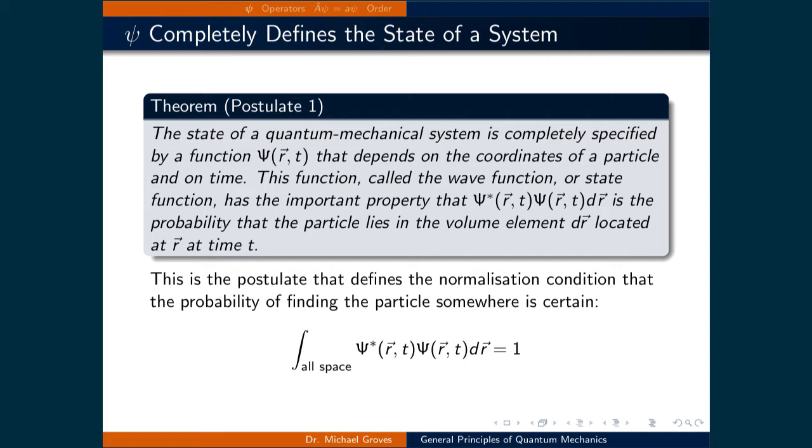This function, called the wave function or state function, has the important property that psi star psi times dr is the probability that the particle lies in the volume element dr located at r and at time t. The postulate is written using all three spatial dimensions, hence r being written as a vector. However, this can be simplified into one coordinate as we have done up until this point.